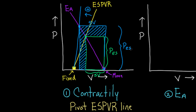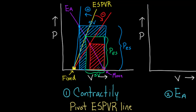So that's easy to remember — just imagine that ESPVR line pivoting. If I decrease contractility, I draw a third line pivoting downward, find the new crossing point with the EA line, and draw a smaller box. Now the box is smaller in both dimensions: end-systolic pressure went down and stroke volume went down as well. So changes in contractility increase or decrease the overall size of the box in both dimensions simultaneously.